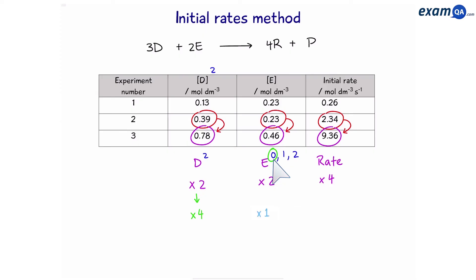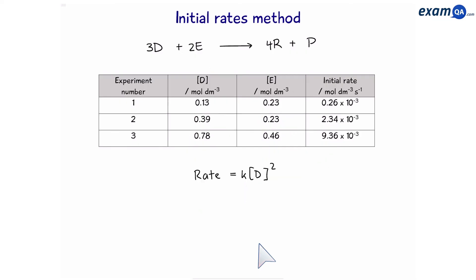Finally, the rate equation is going to be rate = k[D]². Remember, since E is zero order, it's not going to appear in the rate equation. Now if you want to work out the rate constant, we can use the same method as before, looking at the same row. However, don't forget that our data had times 10 to the power of minus 3, so make sure you include that in your calculation.